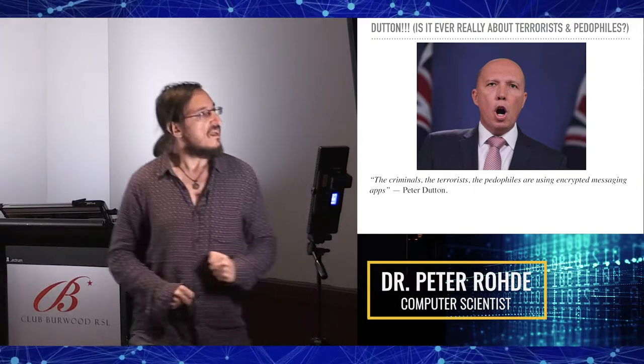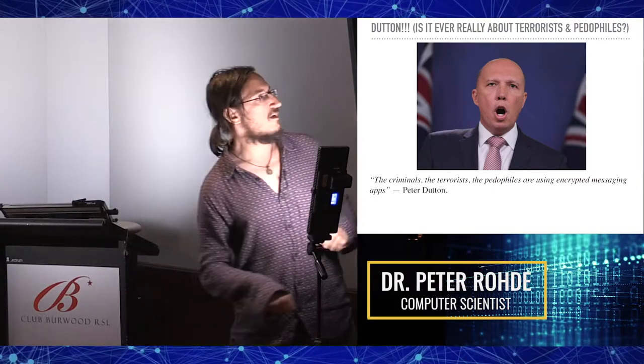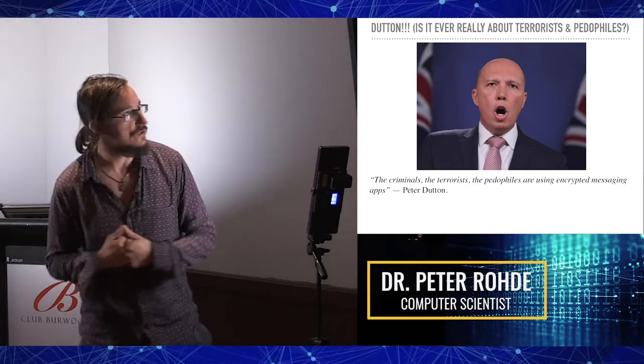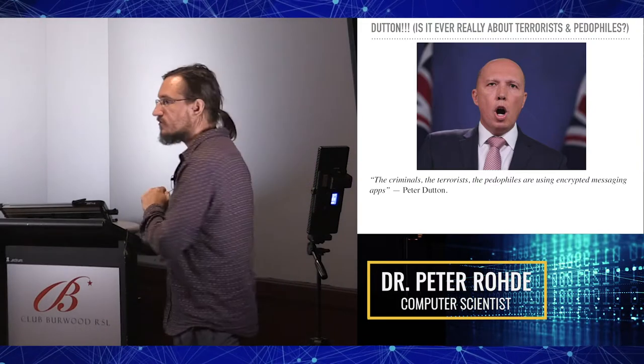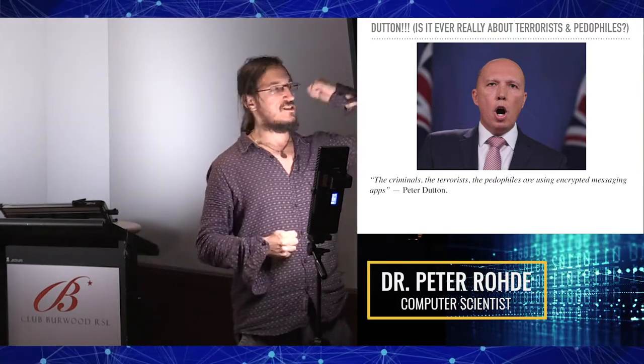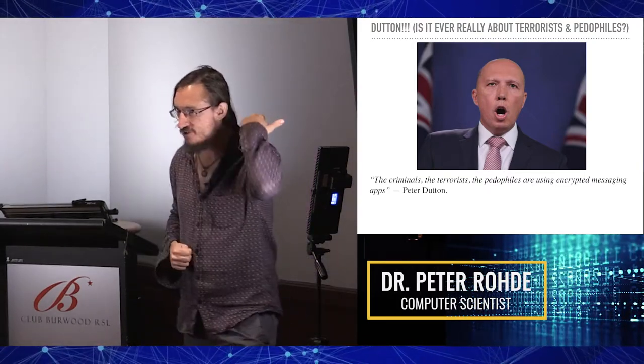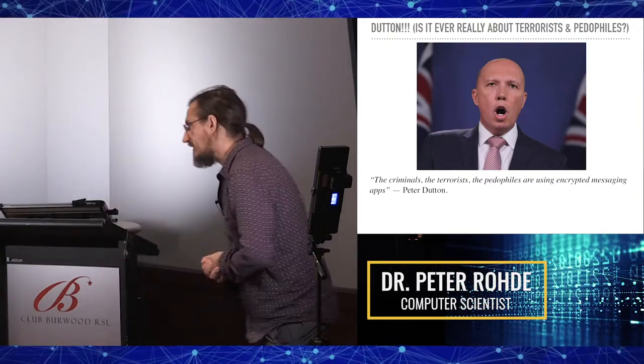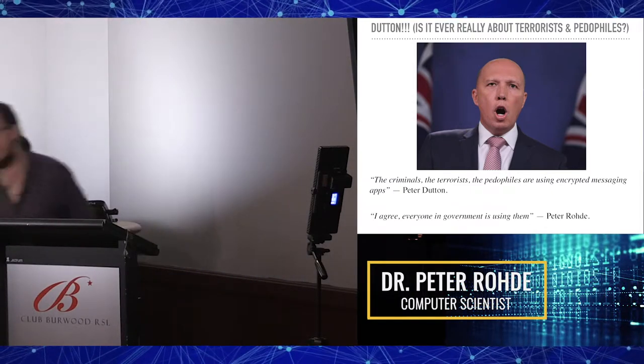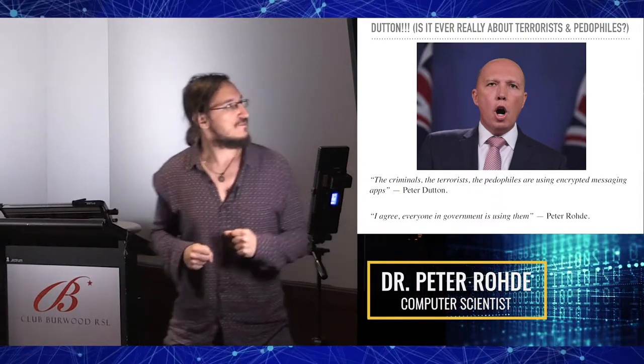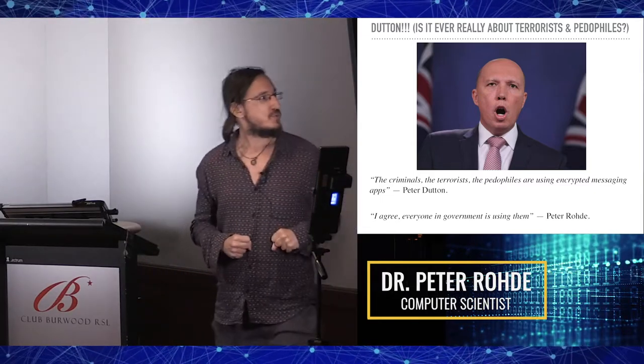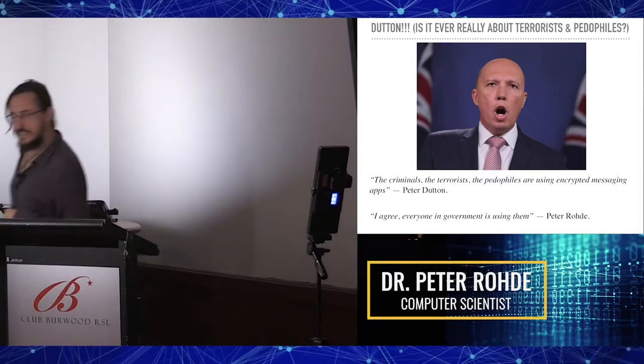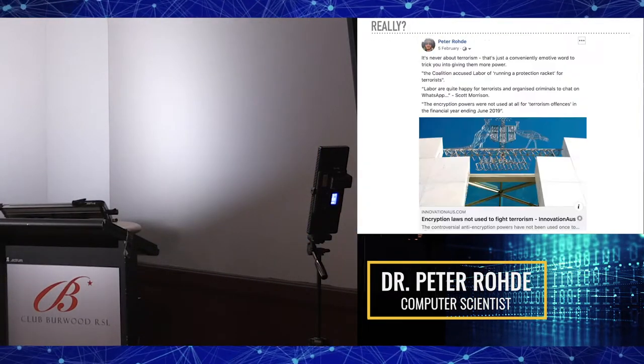Along comes Peter Dutton, and of course he wants us to not have encryption and for the government to know everything that we do. The argument that they always use every single time is terrorists, pedophiles, and drug dealers. Realistically, I kind of agree - that's why everybody in government is using encryption, because that's where all the criminals and terrorists are. But of course he's not referring to government, to himself, he's referring to the rest of us.